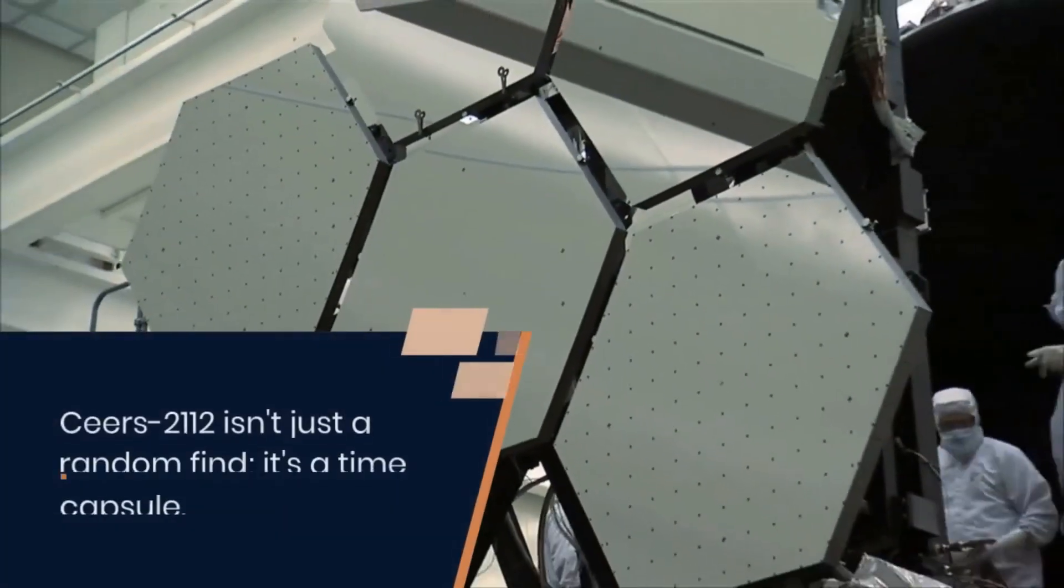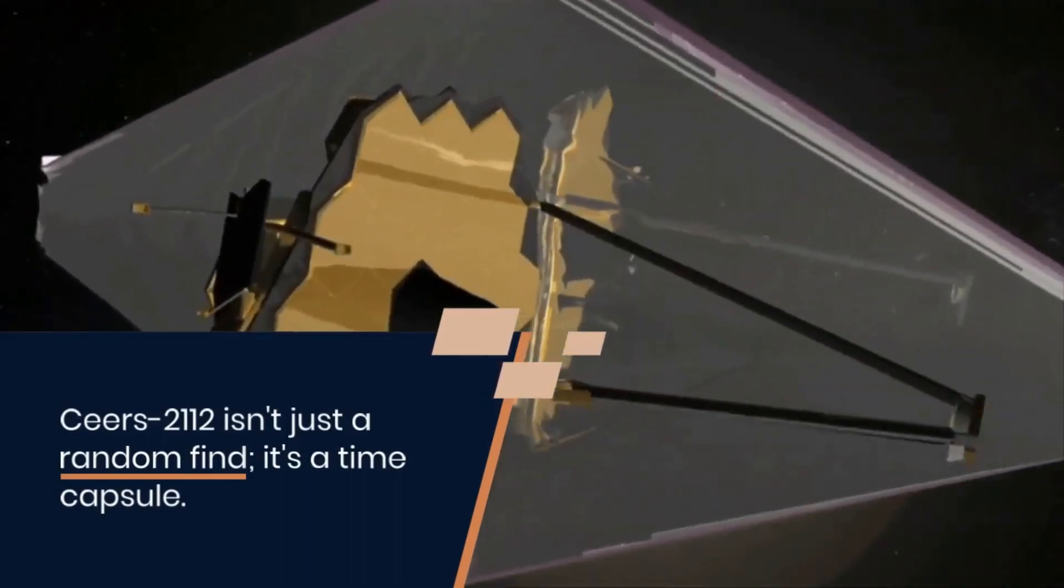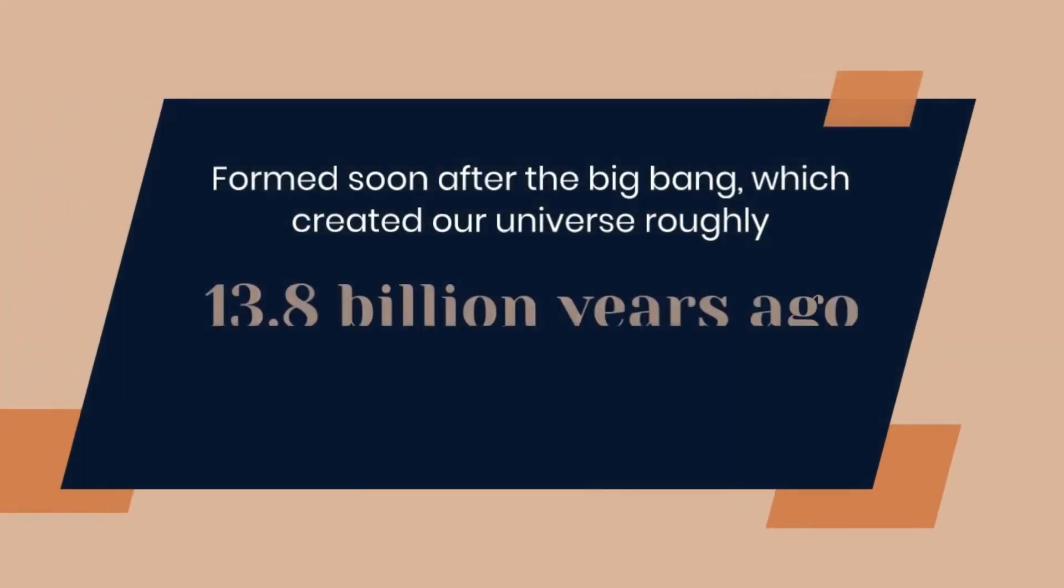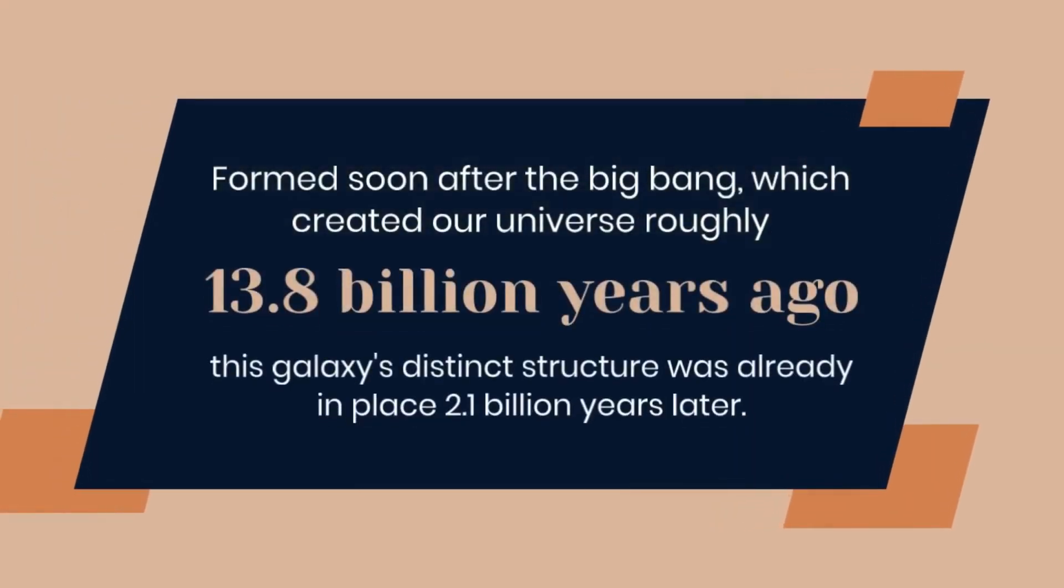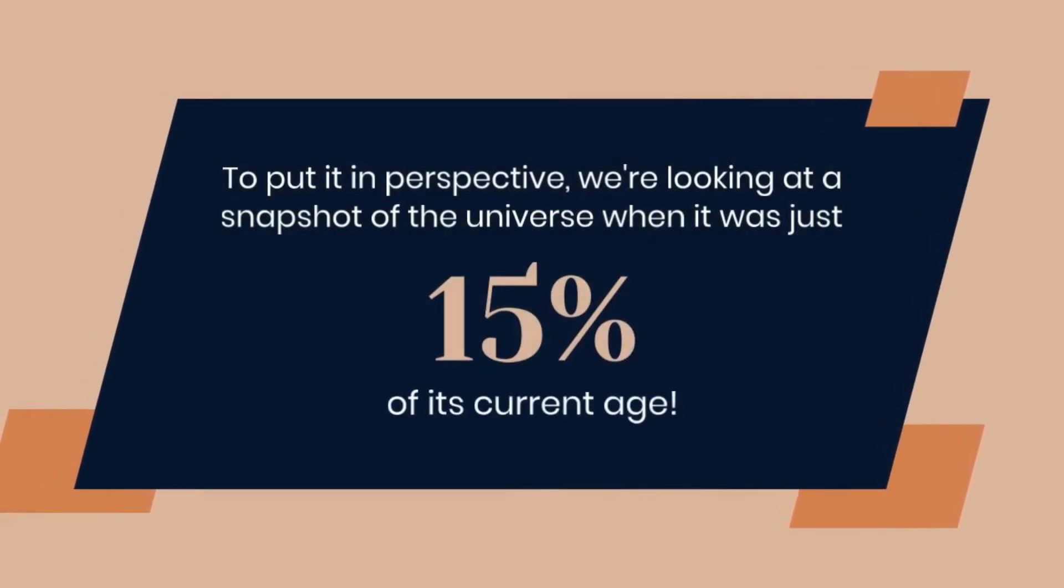Ceers-2112 isn't just a random find. It's a time capsule. Formed soon after the Big Bang, which created our universe roughly 13.8 billion years ago, this galaxy's distinct structure was already in place 2.1 billion years later. To put it in perspective, we're looking at a snapshot of the universe when it was just 15% of its current age.